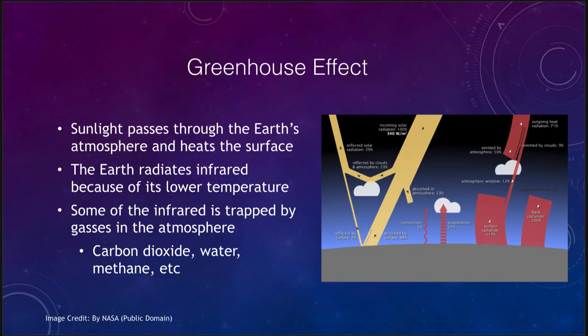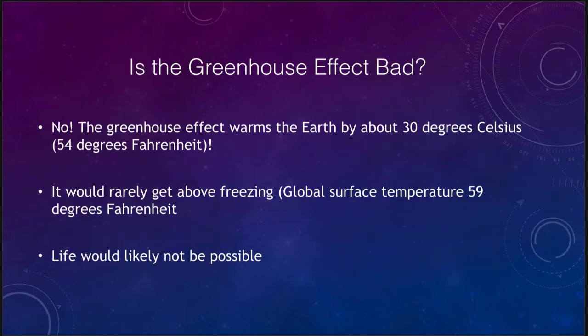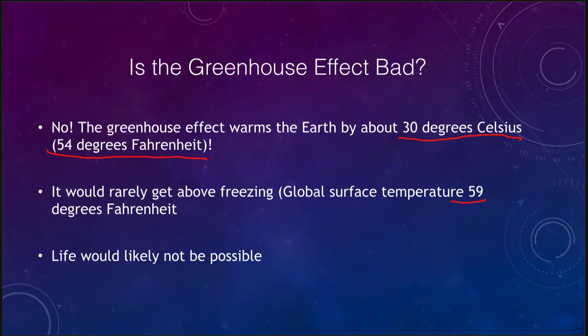Now, is the greenhouse effect bad? Really, no — it's very important for the earth. In fact, it warms the earth by about 30 degrees Celsius, or about 54 degrees Fahrenheit. The average temperature is about 59 degrees Fahrenheit, so if the greenhouse effect did not exist, the average temperature on the earth would be about 5 degrees Fahrenheit — well below freezing — meaning that life would probably never have formed on earth.